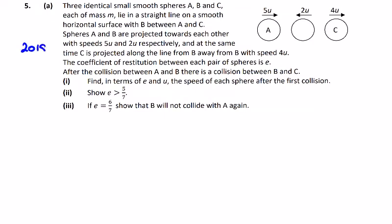This is the 2018 impacts and collisions question, question 5. Three identical small smooth spheres, each of mass m, lie in a straight line on a smooth horizontal surface with B between A and C, as we can see here in the diagram. Spheres A and B are projected towards each other with speeds 5u and 2u.